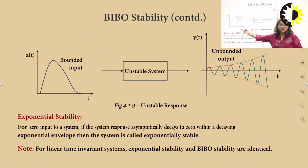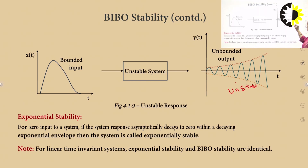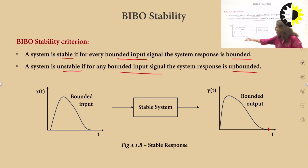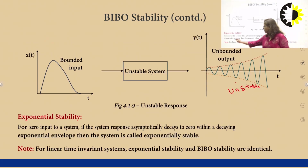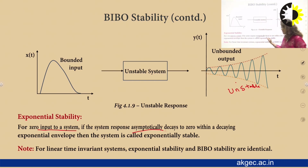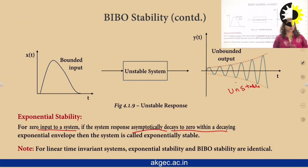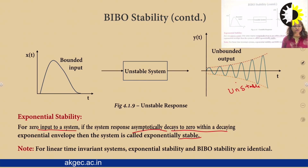We can also see from the diagram that for bounded input, if the response tends to be unbounded the system is unstable, whereas a bounded input giving bounded output means the system is stable. For zero-input systems we test for asymptotic stability — if the response of the system decays to 0 as t tends to infinity then the system is stable, whereas if the response of the system is exponentially growing then the system is unstable.